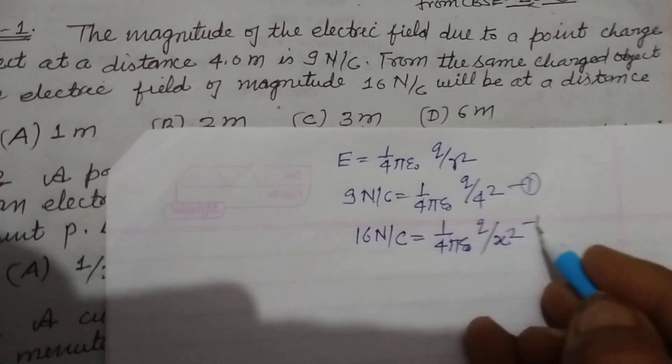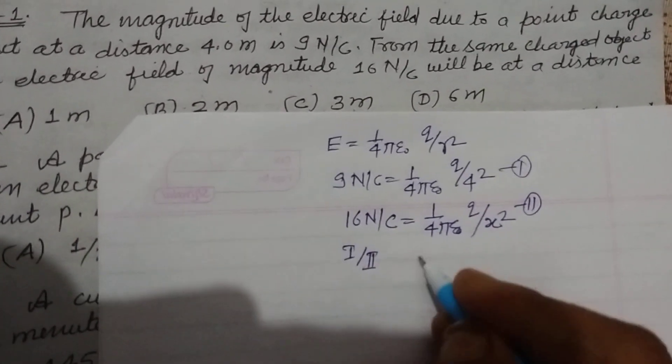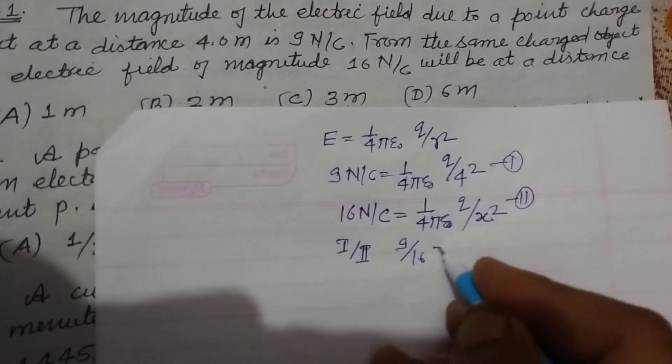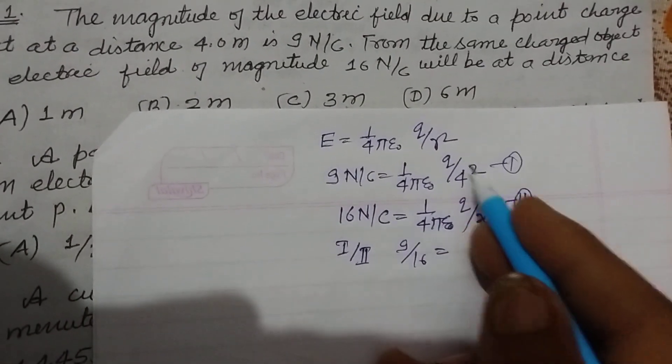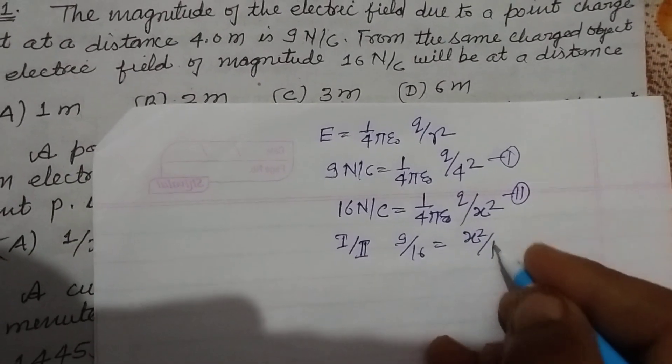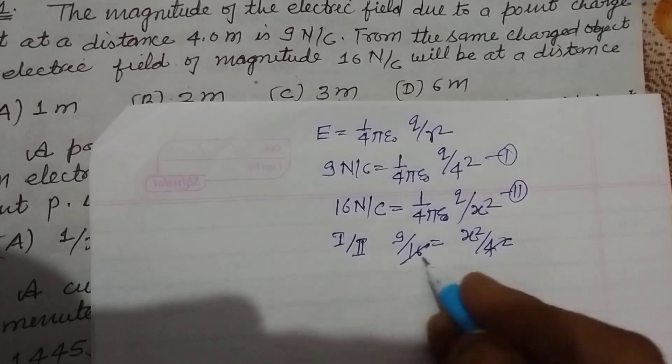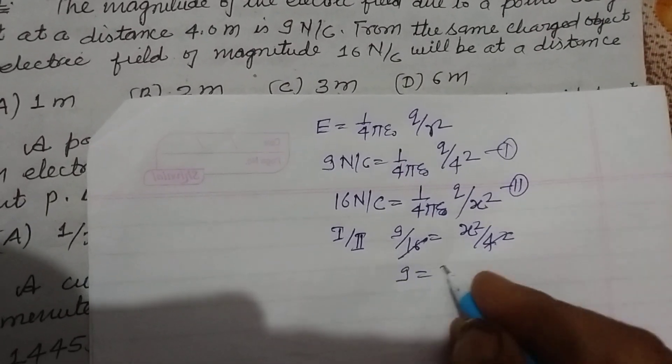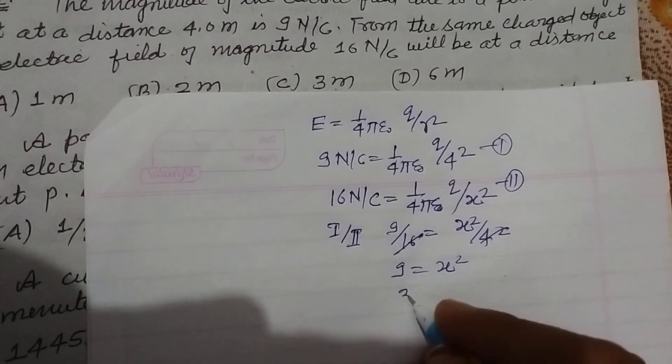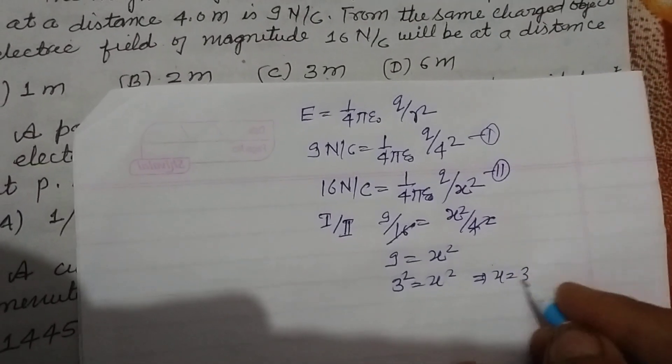So this is first and this is second. Now we take first over second, we got 9 upon 16 equals, this and this cancel, q is also canceled. As you can see, we got x² upon 4², and this is 4 for just 16, so divided by 1 times. 9 equals x². It means 3² equals x², or x equals 3.